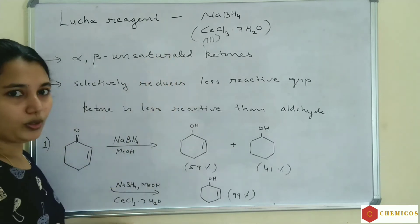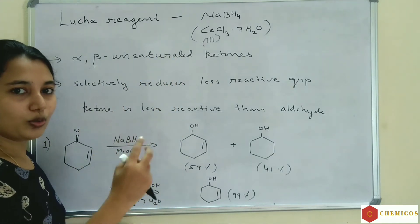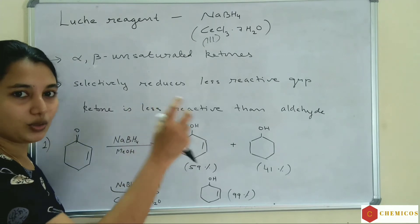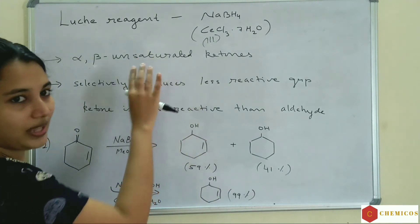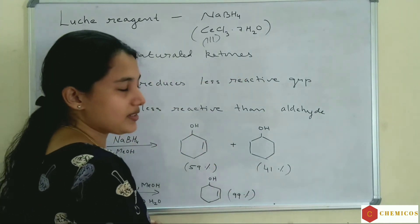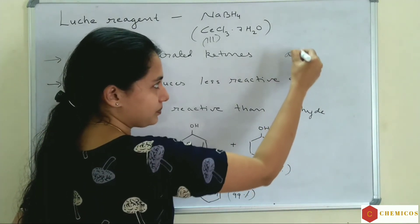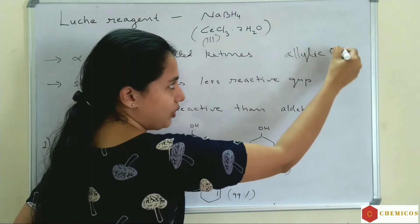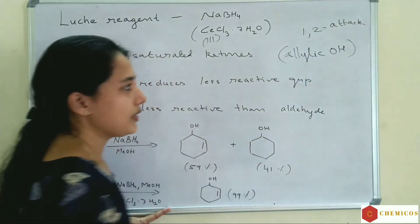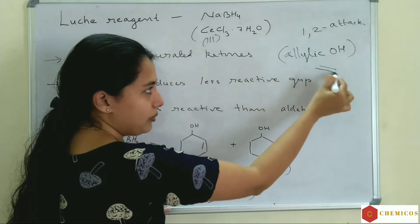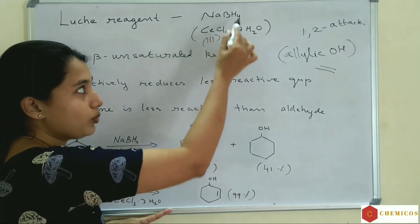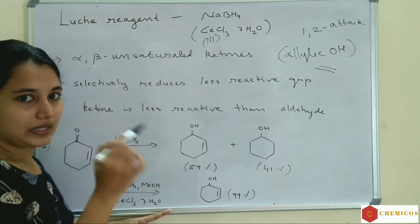In the presence of Luche reagent (NaBH₄ + CeCl₃), sodium borohydride reduces an aldehyde or ketone with a 1,2-attack. Luche reagent attacks alpha, beta-unsaturated ketones in a manner that an allylic alcohol is formed through 1,2-attack. The double bond is not affected in the presence of Luche reagent.